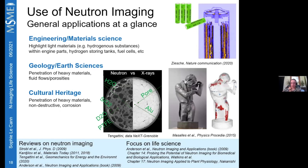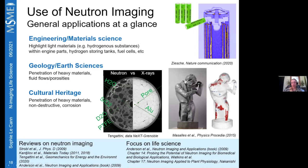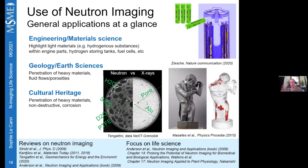In cultural heritage, neutron imaging is used because of its penetration through heavy materials and its non-destructive nature. For example, a copper statue was imaged to see where corrosion was occurring inside, helping anticipate better preservation techniques — all without opening or damaging the artifact.